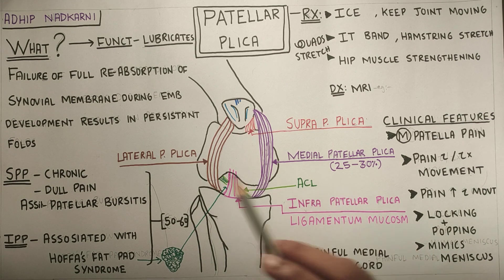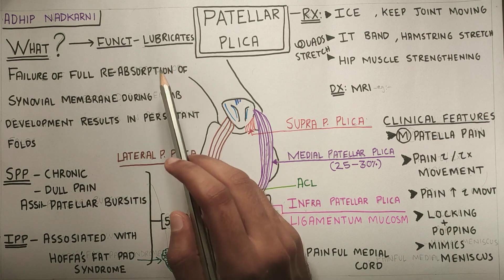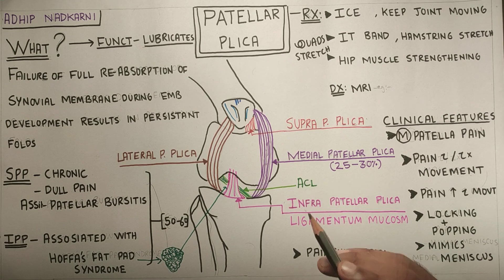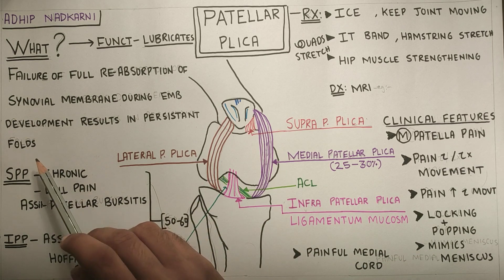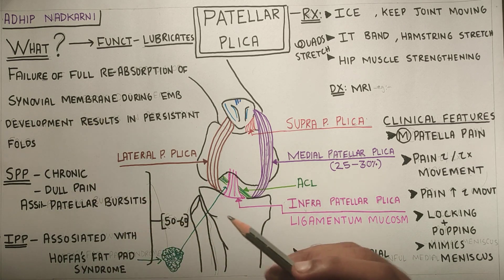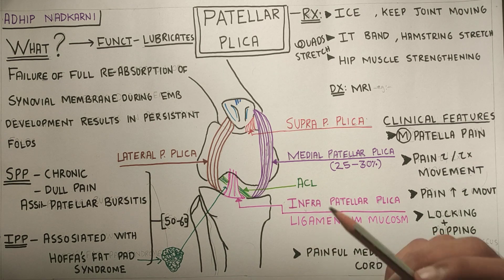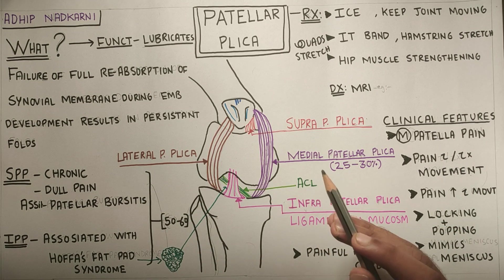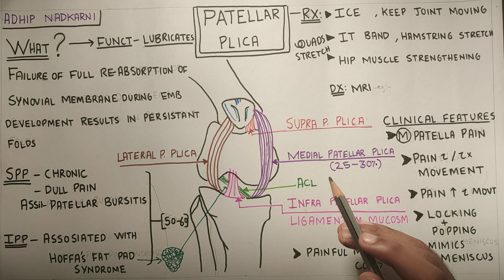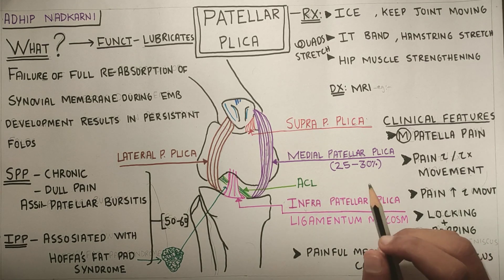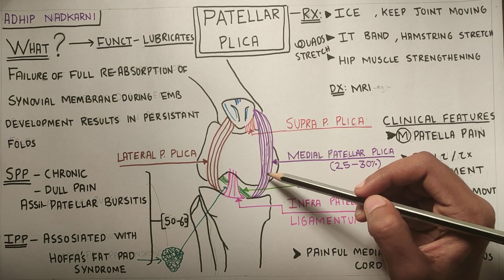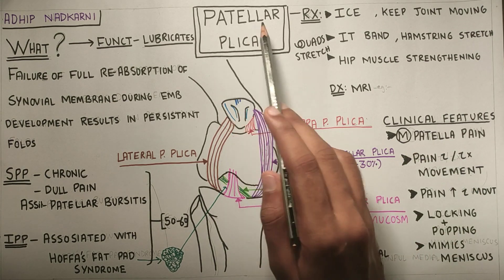So to begin with, what is patellar plica? Failure in reabsorption of synovial membrane during embryonic development results in persistent folds. The synovial membrane is the inner layer of the knee joint capsule, which I talked about in the last video. When there is failure of reabsorption of the synovial membrane during embryonic development, it causes persistent folds around the patella, and these are called patellar plica.